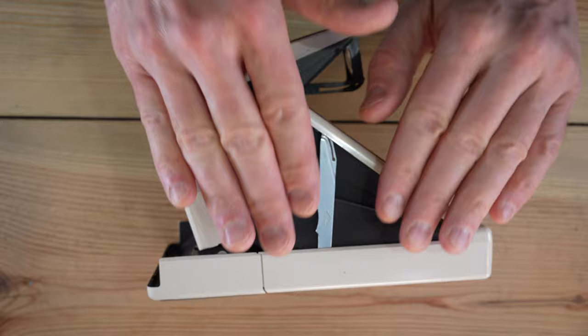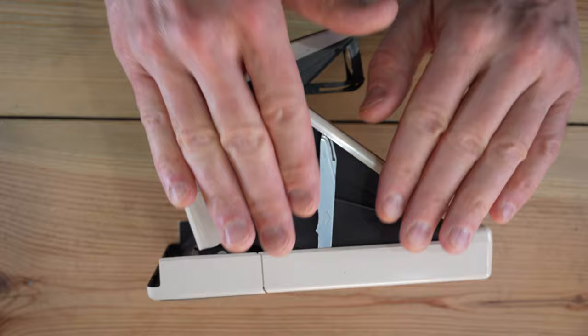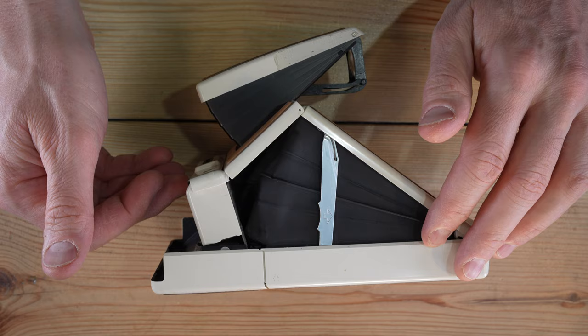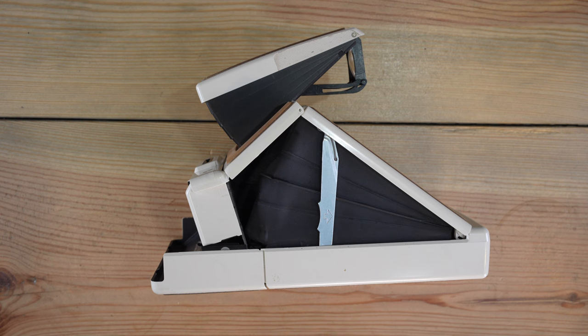It could also be that instead of being like a felt curtain, it flips up. I forget the exact mechanics of how the shutter inside of this works, but there is a mechanism that flips up before this takes the picture with the exposure shutter being in the lens.